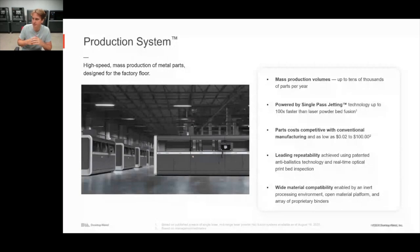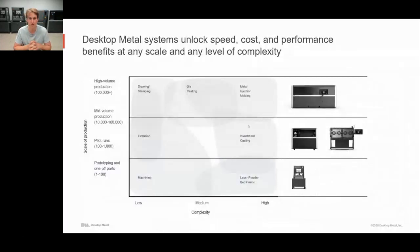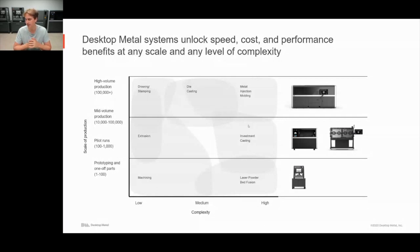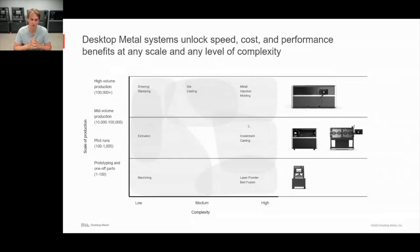To give an idea of the competitive landscape: the Studio System is great for quantities of 1 to 100 parts — things you'd be machining or using laser powder bed fusion for. The Shop System and P1 are great for 100 to 100,000 parts per year, competing with extrusion, investment casting, and other casting methods. The Production System is for high-volume production competing with metal injection molding, die casting, and stamping.